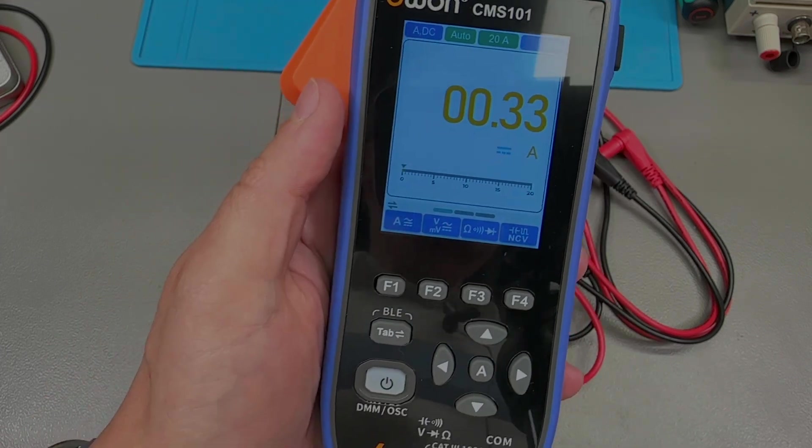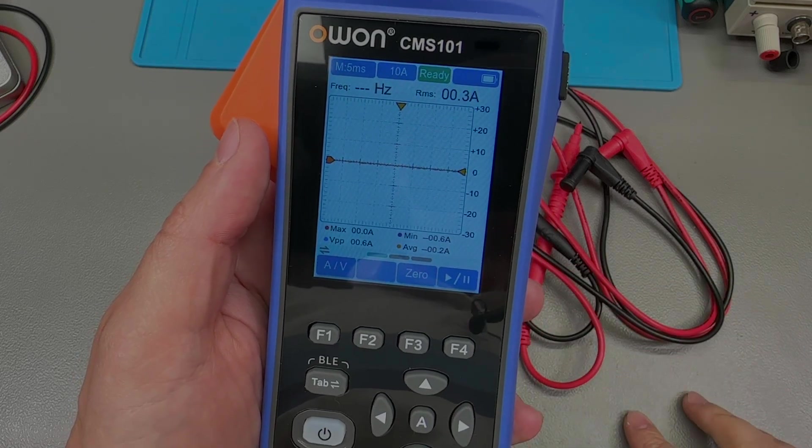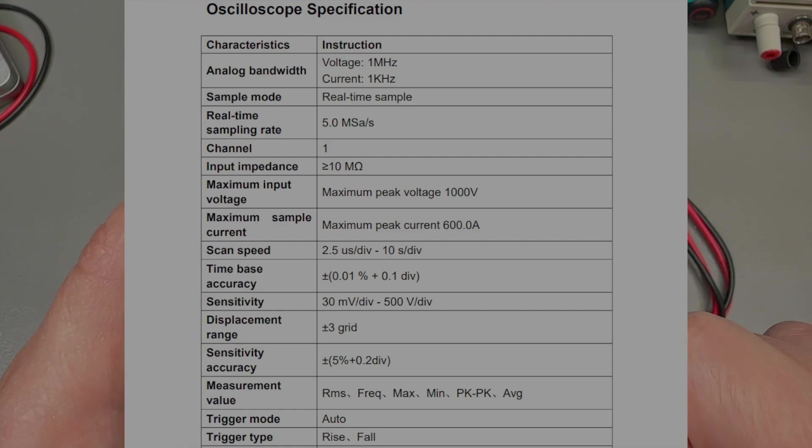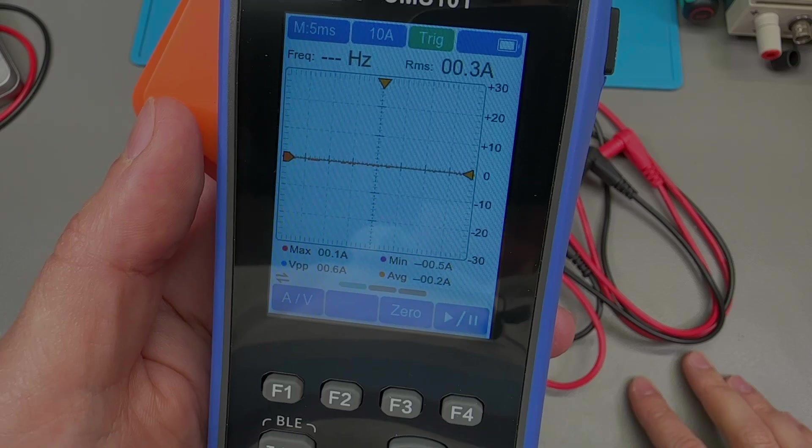On top of these, the meter does add basic oscilloscope functionality for voltage and current waveforms with an analog bandwidth of 1 megahertz for voltage and 1 kilohertz for current, with a 5 mega sample per second sampling rate. And it can display measurements like RMS value, frequency, mean, max, peak to peak, and average.